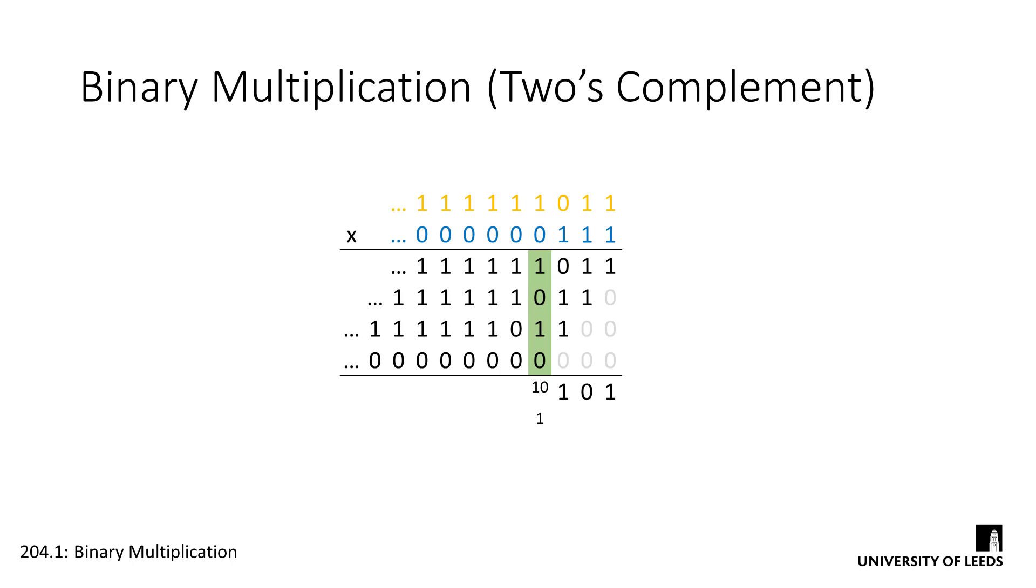We can repeat this process for the next couple of columns. We've just got two ones in each of them. And this carry is going to propagate forward until we get to the sixth column. Now, in the sixth column, we've got three ones already, which gives us a subtotal of 1, 1 before we deal with any carries.